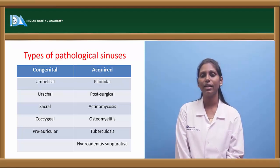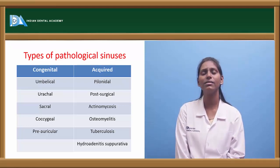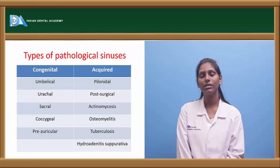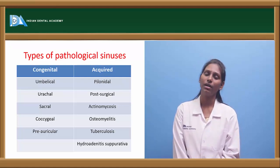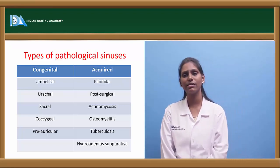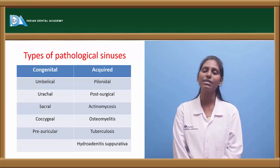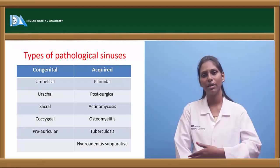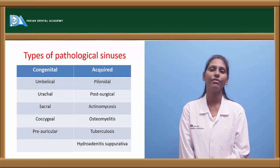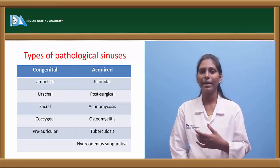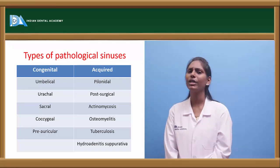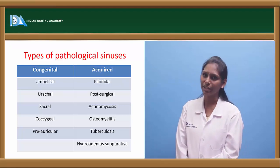Surgeries for pre-auricular sinuses usually carry some risk because the facial nerve is in very close proximity. Treatment with antibiotics will be helpful initially, but in case of very recurrent problems, pre-auricular sinuses have to be excised.